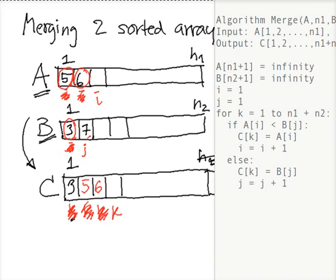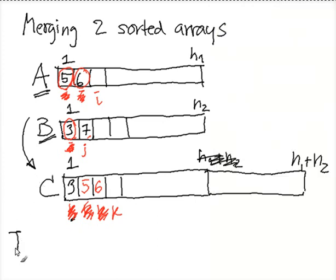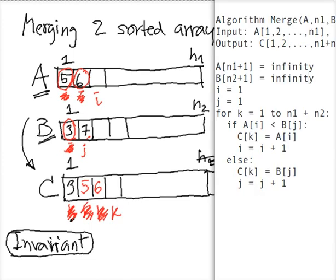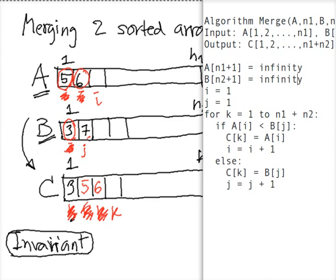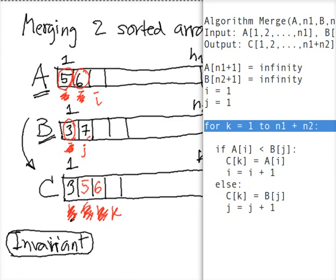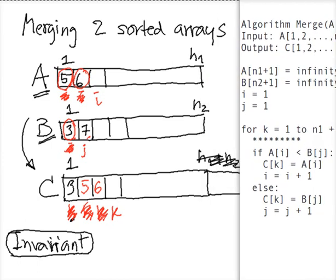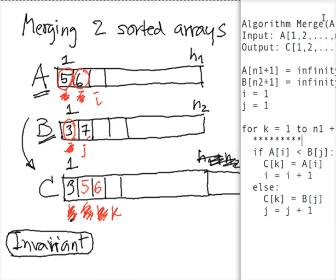Let's talk about the correctness of the merging procedure. When we want to talk about correctness, we will use the method discussed in class — we'll talk about invariants. An invariant is a condition that remains true throughout the execution of the loop. We want three things when we talk about invariants.